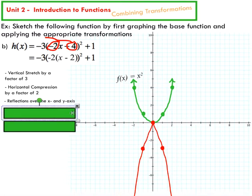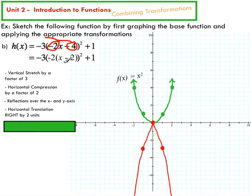The next thing I can look at is my translations. You can see that I've got a shift to the right by 2. Remember, if we didn't factor out that negative 2, many people would say you've got a shift to the left by 4, or you'd end up with a very different graph. So make sure you always factor out that coefficient in front of x.